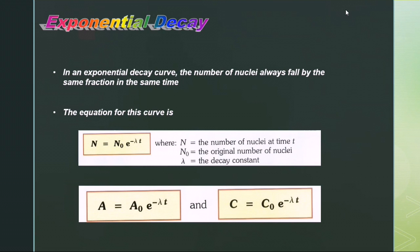Activity is proportional to the number of nuclei present, A = λN, as we studied in the previous lesson, and the recorded count rate is proportional to the activity.